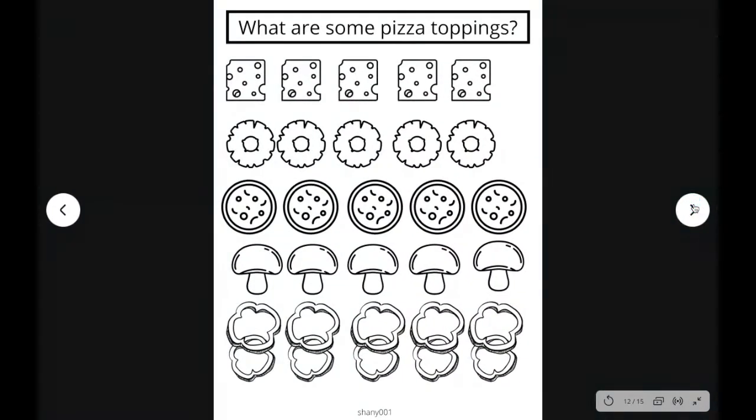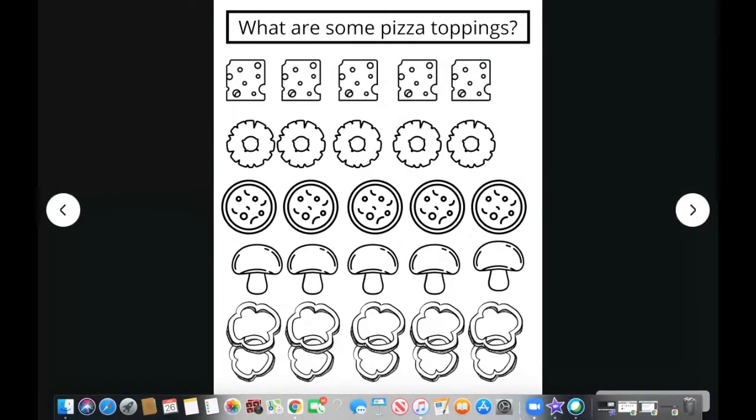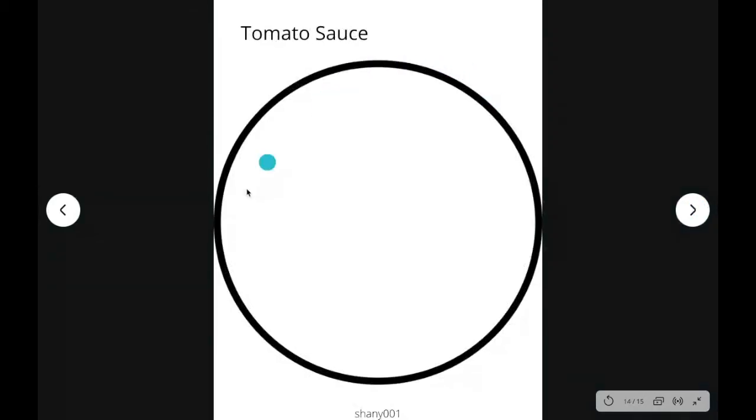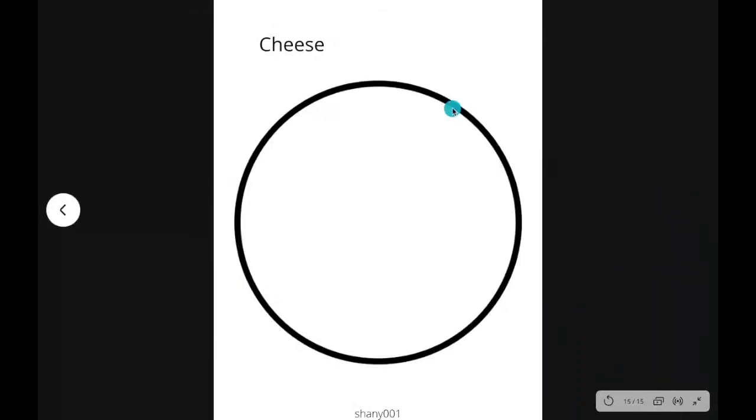I also will add these printable sheets if you would like to color your own toppings. This is the outline for the tomato sauce. And then this is the outline for the cheese.